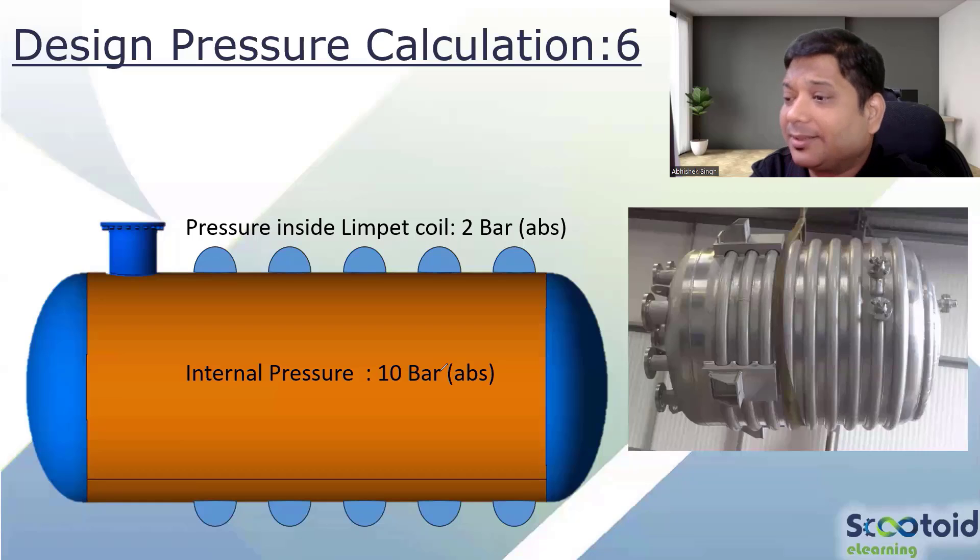See, two bar absolute means that is the pressure which is at two bar absolute, so already one bar is there by atmosphere and one bar additional. Absolute takes care of atmospheric - they are included.